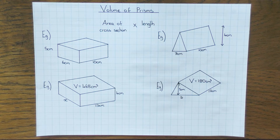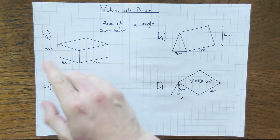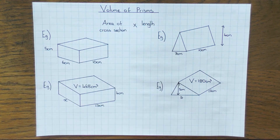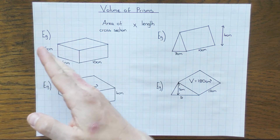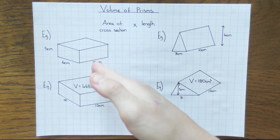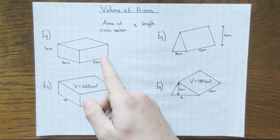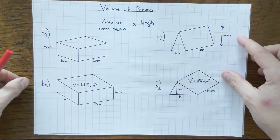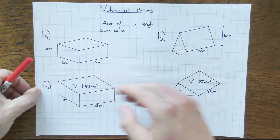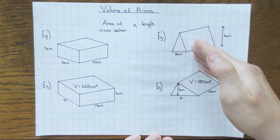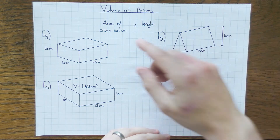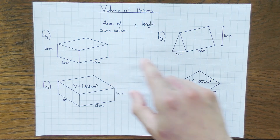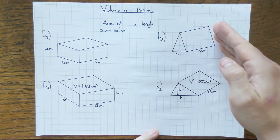The cross section is the 2D shape that will run all the way through the prism. For example, in this one here, this 5×6 rectangle runs all the way through the shape. So if I was to chop that prism anywhere along these 10cm, that rectangle would always be the same throughout. Likewise, if I was to chop this triangular prism anywhere, that triangle would be constant all the way throughout. That's what I mean by the cross section — it's the 2D shape that goes all the way through the shape.